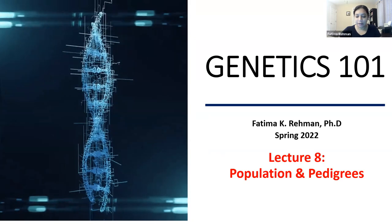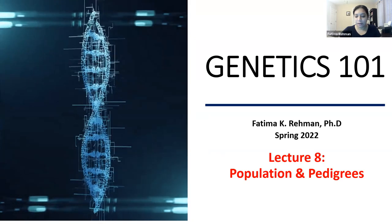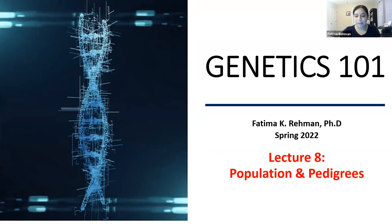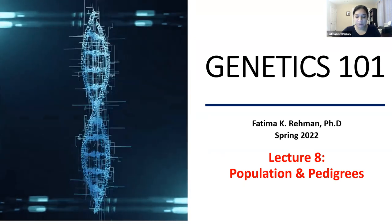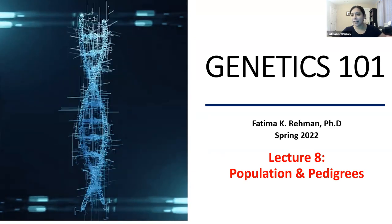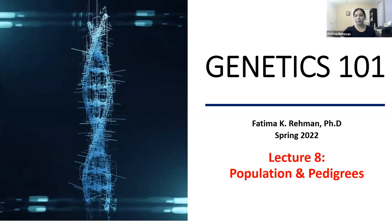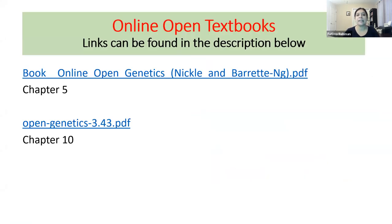We are going to be having fun learning about population and pedigrees — the fun part of genetics. I really enjoy it, so hopefully you guys like it as well. We're going to be going over basically chapter five in the Nicolette Barrett book, and from the Open Genetics textbook, we're going to be looking at chapter 10, or parts of chapter 10.